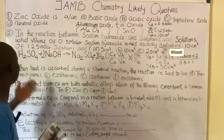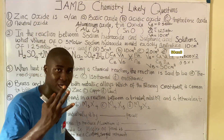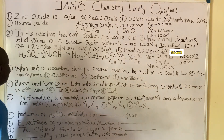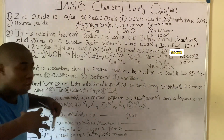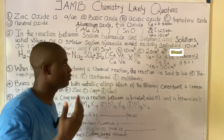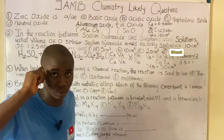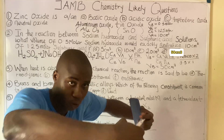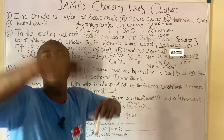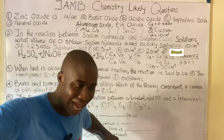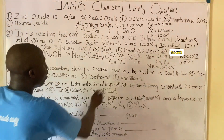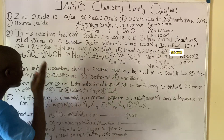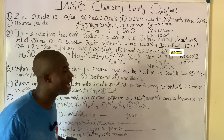Moving to question three: When heat is absorbed during a chemical reaction, the reaction is said to be endothermic. If heat is released, the reaction is exothermic. The answer is option D.